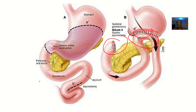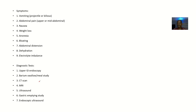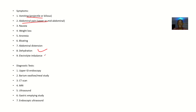It could also be adhesions or foreign bodies. Patients with gastric outlet obstruction may present with vomiting — projectile or bilious — abdominal pain (upper or mid-abdominal), nausea, weight loss, anorexia, bloating, abdominal distension, diarrhea, and electrolyte imbalance.